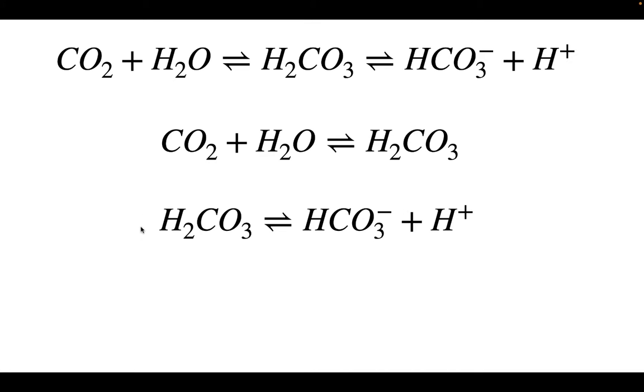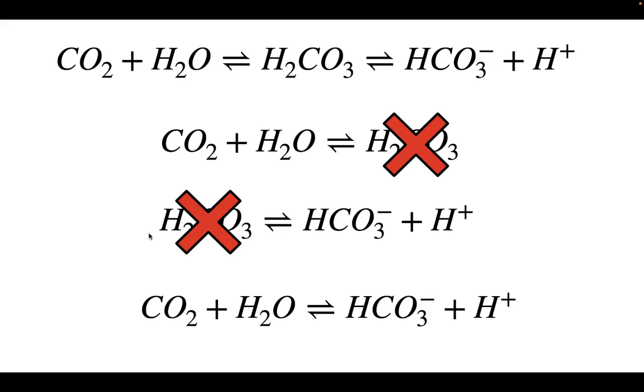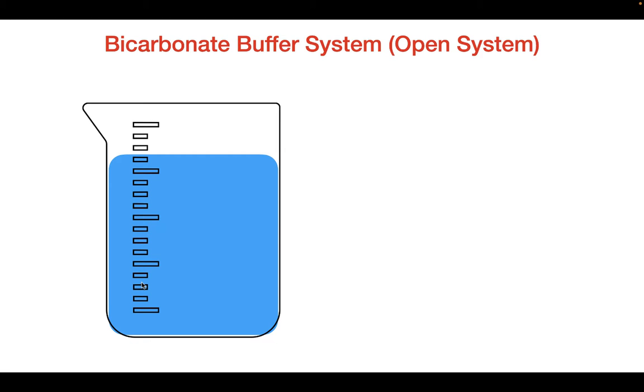Since carbonic acid is common to both equations, we can cancel them out and form this general equation: CO2 + H2O ⇌ HCO3⁻ + H⁺. This equation is going to be used for the interaction that CO2 has with water. Now we're going to look and see how this works in the beaker.